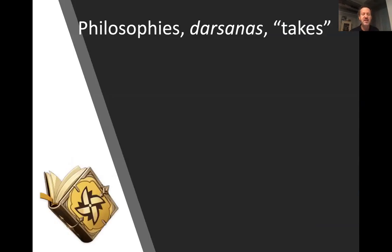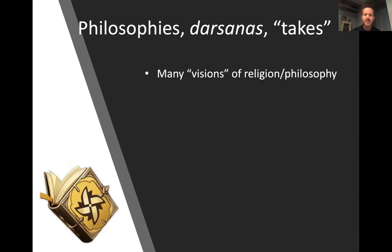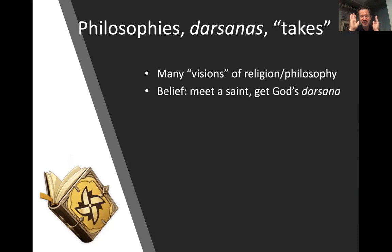Philosophies are called darshanas — plural of darshan. The word literally means 'vision,' but informally it means a philosophy, a worldview, a paradigm, a model of reality — your take on reality, your perspective from where you're looking. There are six Vedic orthodox darshanas, but there are many thousands of different perspectives on religion and philosophy in India.